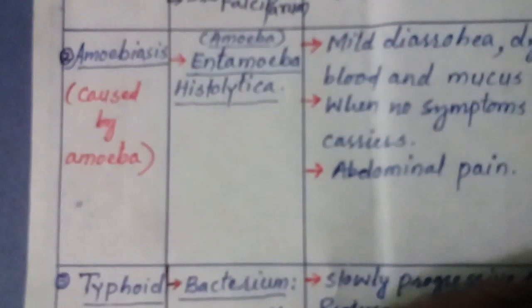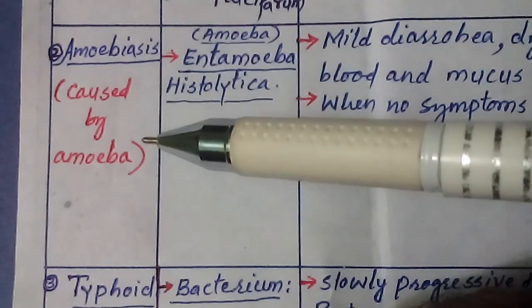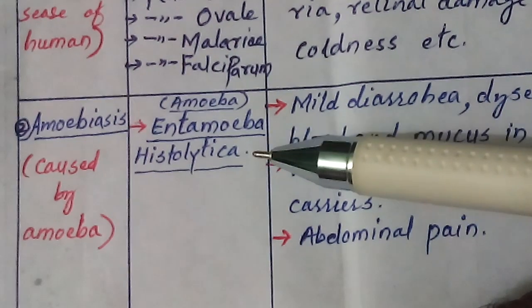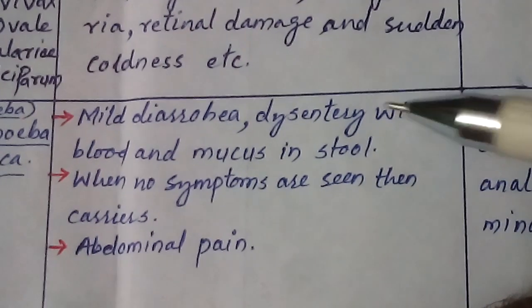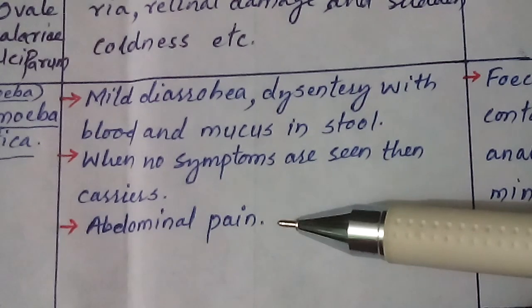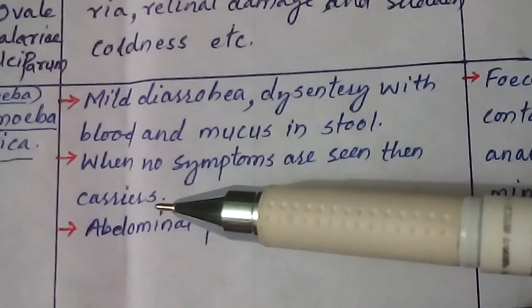The next disease on the list is amoebiasis. This disease is caused by an amoeba, so the causative agent is the amoeba Entamoeba histolytica. Entamoeba histolytica causes the disease amoebiasis. The symptoms involve mild diarrhea, dysentery with blood and mucus in stool, and abdominal pain. If no symptoms are seen, the patient is considered a carrier — meaning the disease will be carried by that patient and transmitted to the next person.